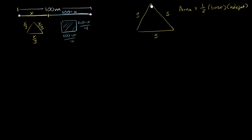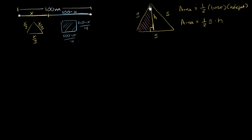The height is the altitude we drop, perpendicular to the base. So our area is 1/2 times s times h. Now, how can we express h as a function of s? The altitude splits the equilateral triangle into a right triangle, and the bottom side of that right triangle has length s/2.